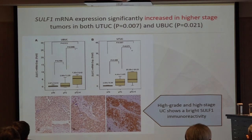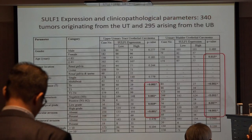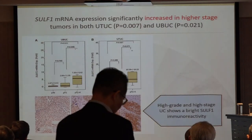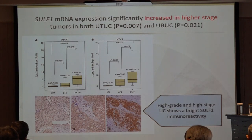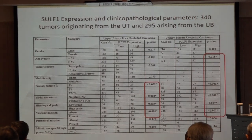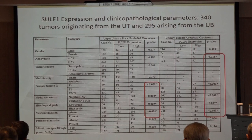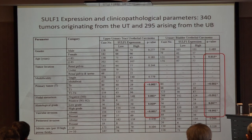We found SOFTIN1 expression increases in higher tumor stages. IHC staining also showed that high-grade and high-stage UTUC showed bright SOFTIN1 immunoreactivity. From our cohort study specimens, we also found that SOFTIN1 expression is associated with tumor T-stage.